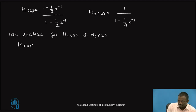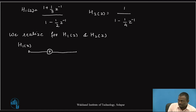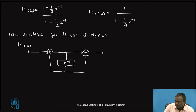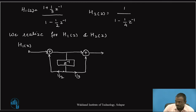H1(z) can be realized with one delay unit. The coefficient in the numerator branch is 1/3, and the feedback coefficient is 1/2. This is the direct form 2 realization for H1(z).